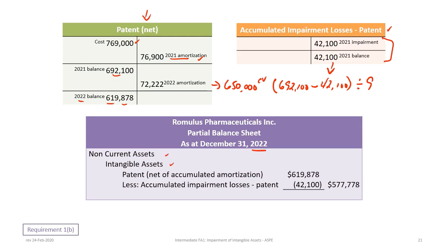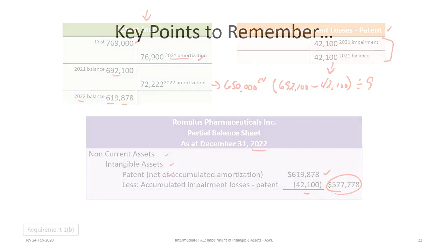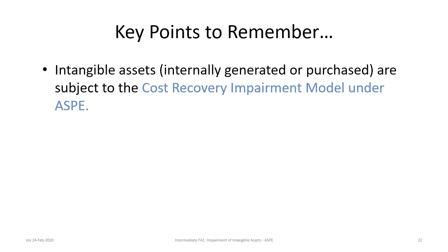On the balance sheet under non-current assets — intangible assets — the patent is now shown at a net value of $619,878. Deducting the accumulated impairment losses of $42,100 gives a net carrying value of $577,778, consistent with our earlier calculation.